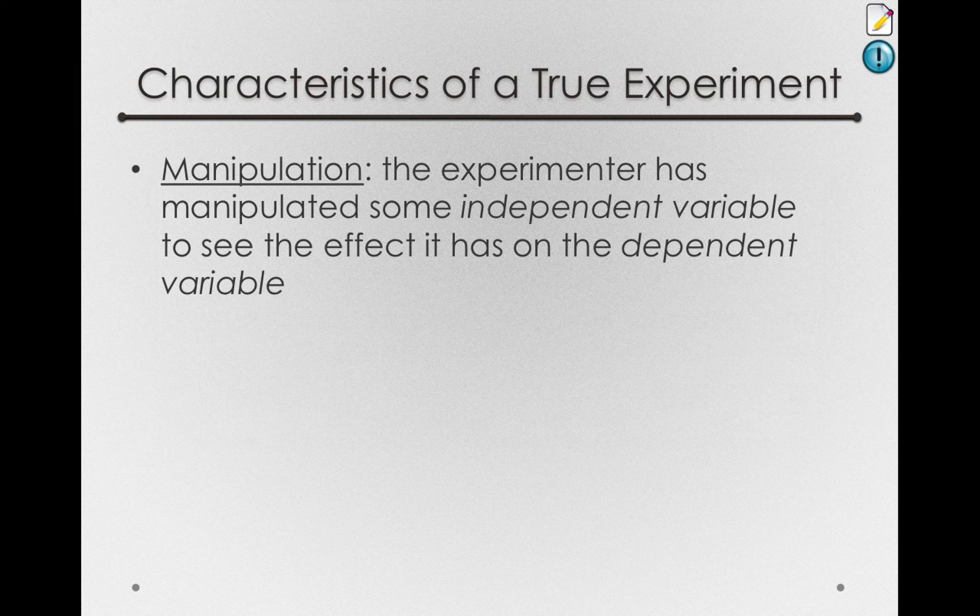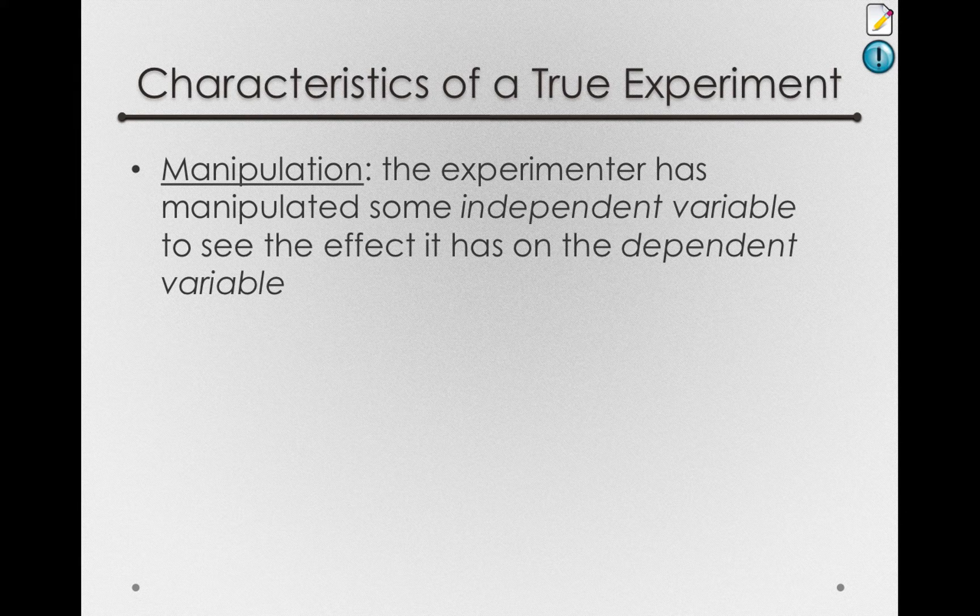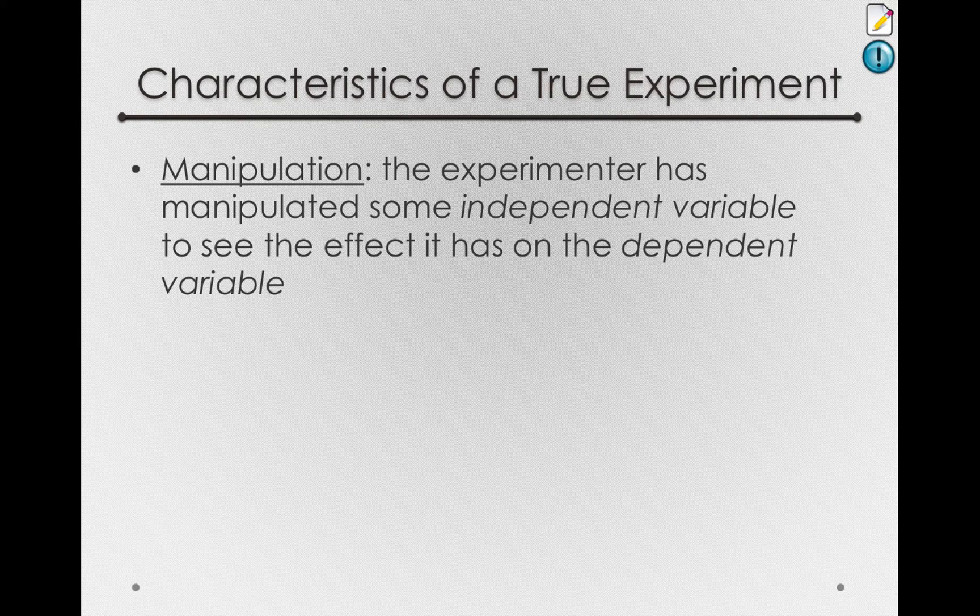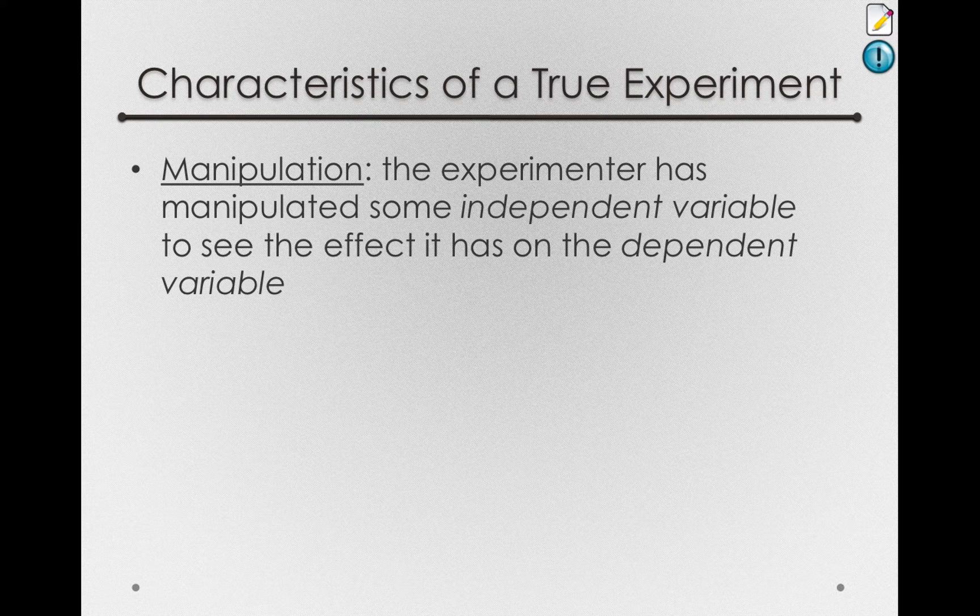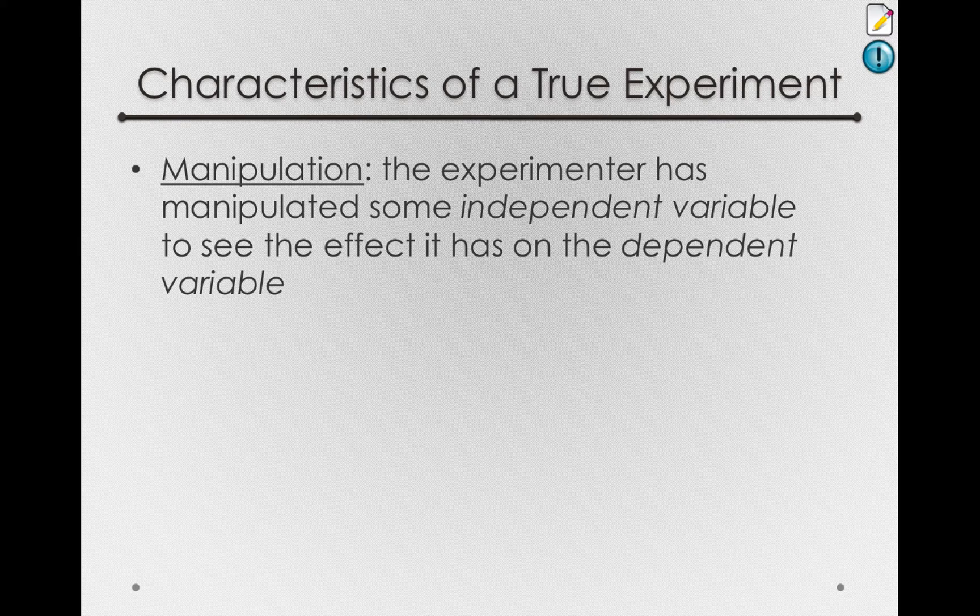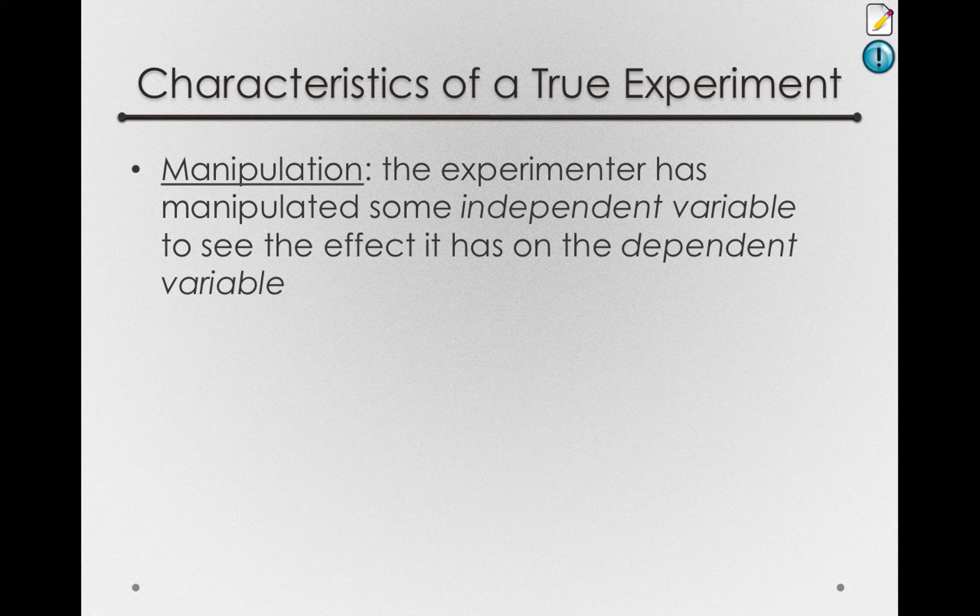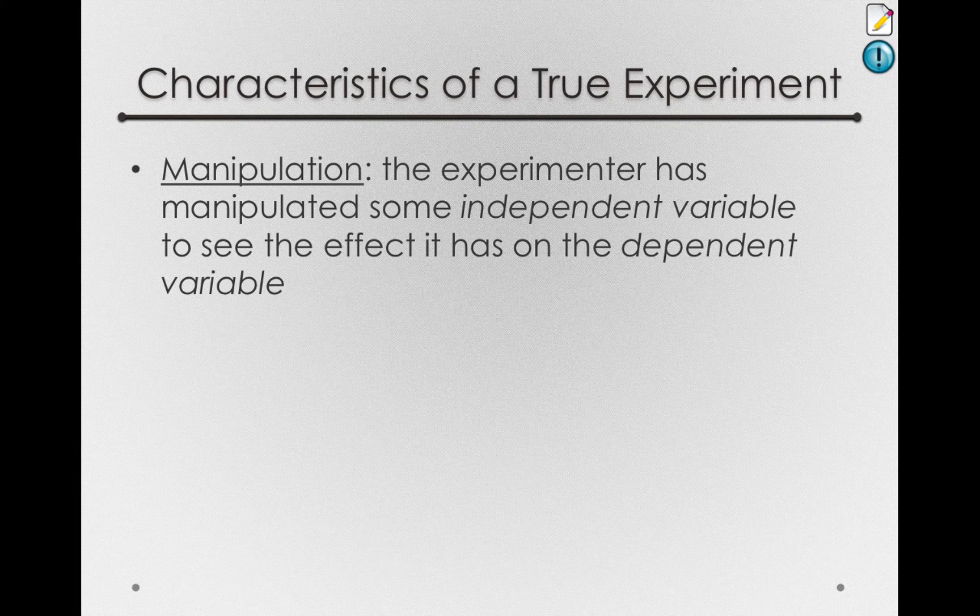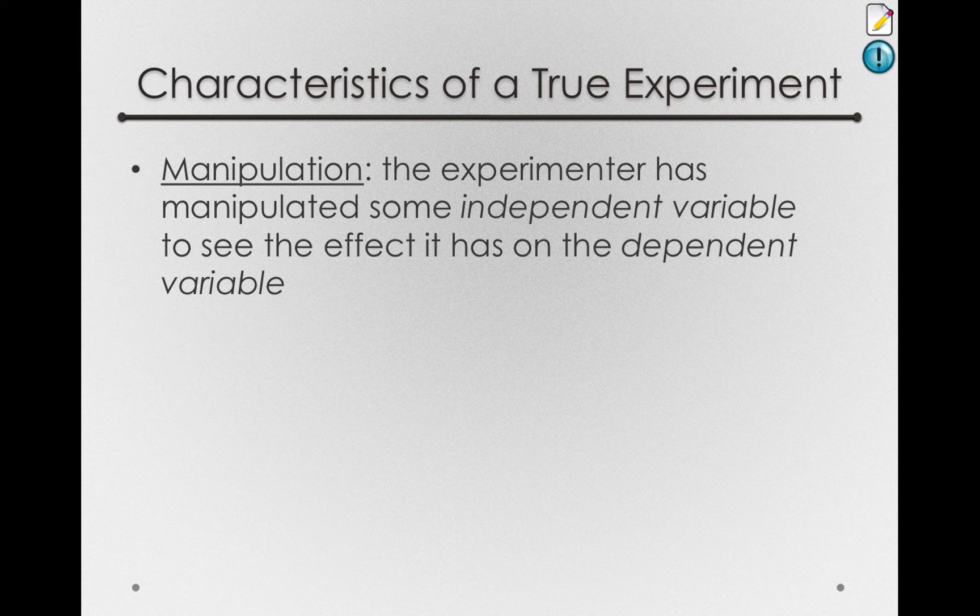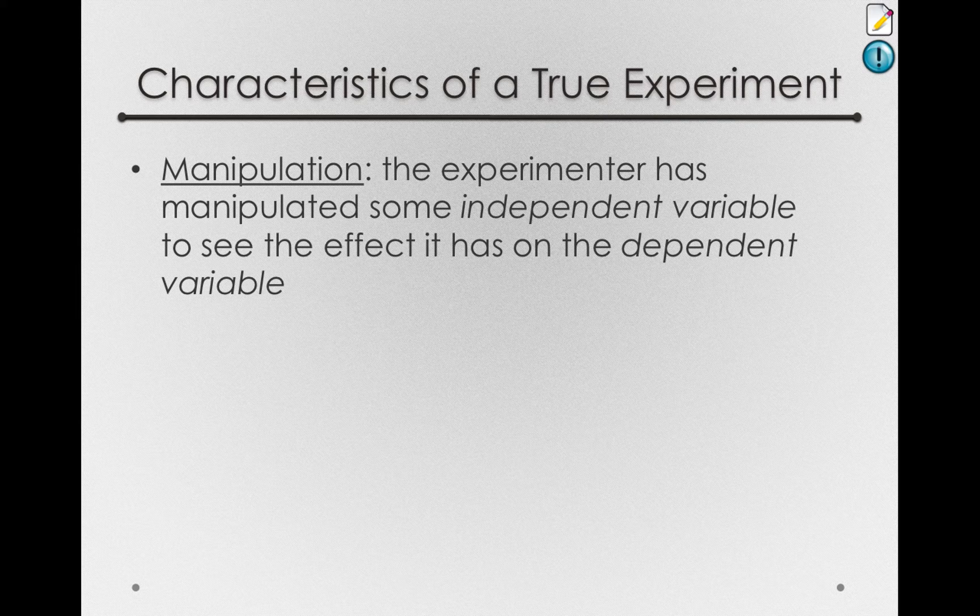In any true experiment, we have some sort of manipulation to see how the independent variable will affect the dependent variable. This is a critical distinction between a true experiment and a correlational research methodology. In a true experiment, we're actually manipulating or changing the world to see what consequences it has. Whereas, in correlational work, we're simply observing what's happening in the world and trying to make inferences about what is going on.